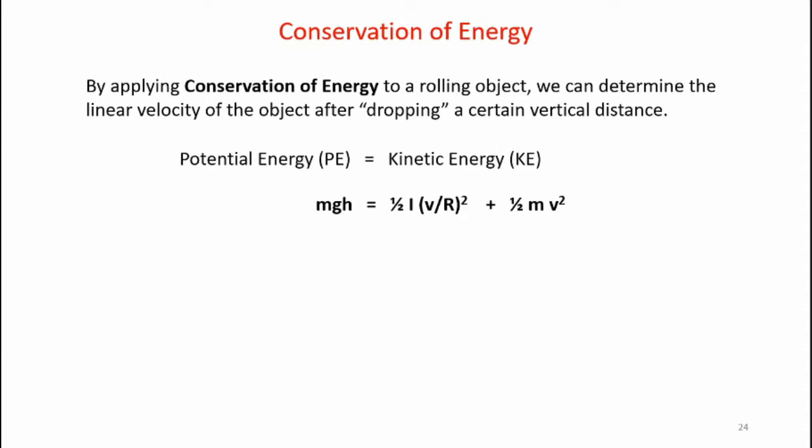Conservation of energy says that potential energy equals kinetic energy. So, we see that mgh, the potential energy, is equal to one-half moment of inertia times v divided by r squared plus one-half mv squared, the equation we determined earlier.